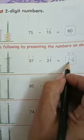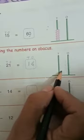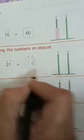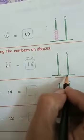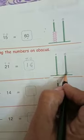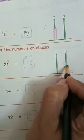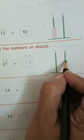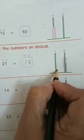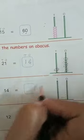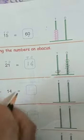Now we will show this answer on this abacus. 6 ones: 1, 2, 3, 4, 5, 6. 1 ten: 1. Clear?